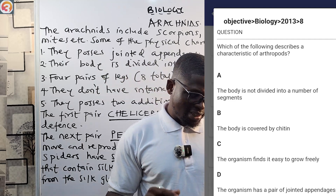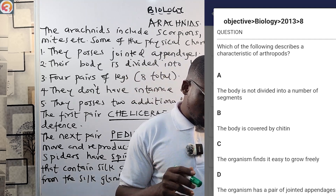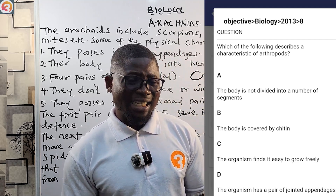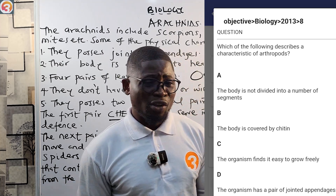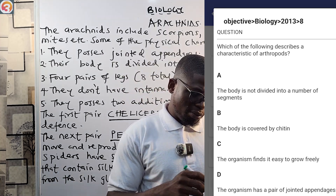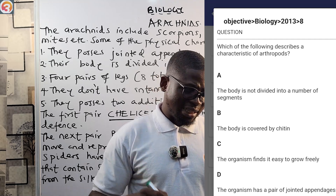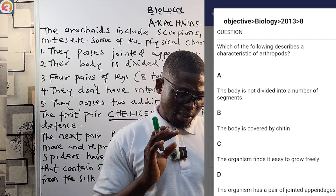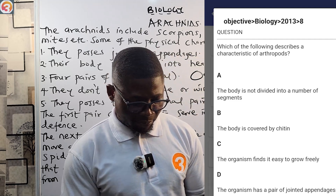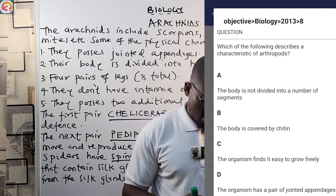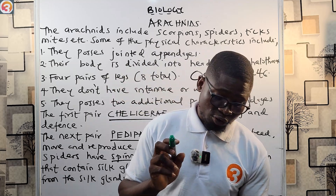Option C says the organism finds it easy to grow freely — no. Option D says the organism has a pair of jointed appendages — some have eight pairs of jointed appendages, so that's not the most accurate. The correct answer is B: the body is covered with chitin.